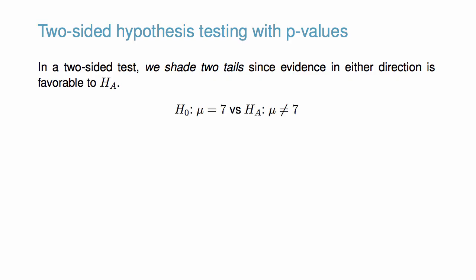Let's consider the hours of sleep example again, but this time with a two-sided alternative hypothesis. That is, the population mean is not equal to 7. Sample data are collected at a different college where 72 students average 6.83 hours of sleep with a standard deviation of 1.8.